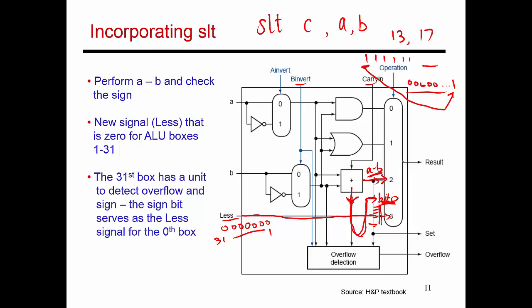And the other 31 bits are all hardwired to 0. So the result that comes out of the set on less than is going to be whatever input I provide to this third input to the multiplexer. So the operation code for a set on less than is going to be 1, 1, saying that I care about input number 3.